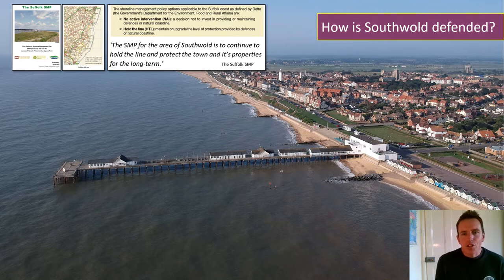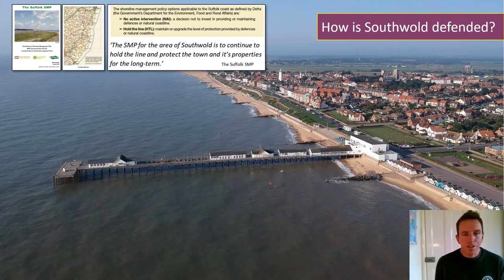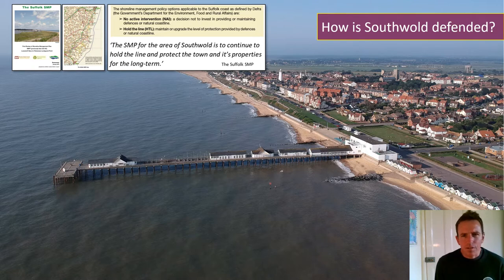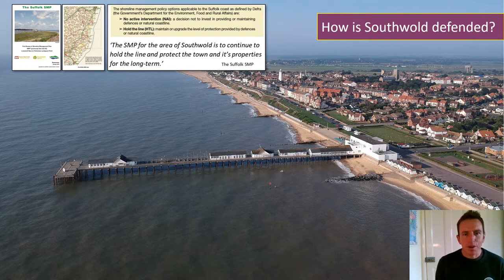The groins have a twofold job: to protect against longshore drift and at the same time to create and maintain beach levels, ensuring there is a public asset — the beach — in front of the town. The beach offers a first line of defence against erosion but also provides a tourist facility. So Southwold is defended by groins to maintain and build up sand levels, and by a seawall to literally hold the line of future erosion.